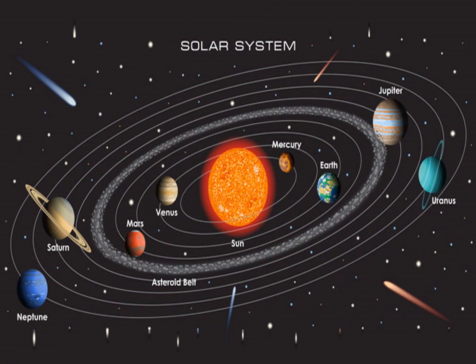As you can see in this picture, here is the sun. The sun is a star and it is the biggest object in our solar system. After it, the first planet is Mercury, second one Venus, third one Earth, fourth one Mars, fifth one Jupiter, sixth one Saturn, then Uranus, and Neptune. So, we have the sun and eight planets.